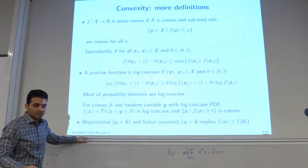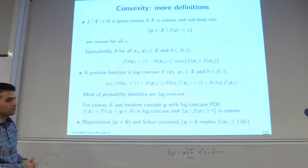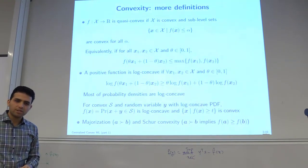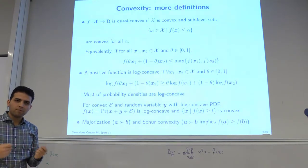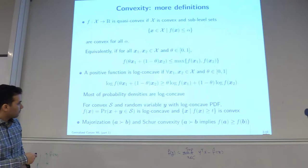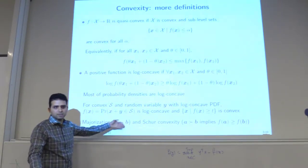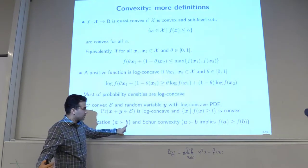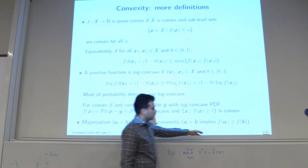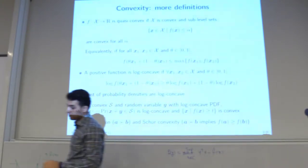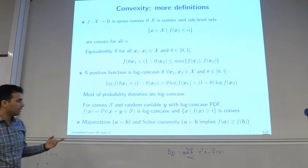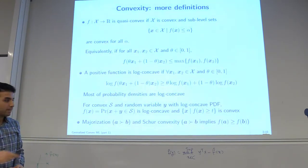The last generalization we mention — though not covered in this course — is majorization and Schur-convexity. This generalizes convexity over sequences rather than sets of points. If one sequence majorizes another, and f is Schur-convex, then the function evaluated at the majorizing sequence is larger. For example, entropy is often Schur-convex, and you can do minimization or maximization over it.